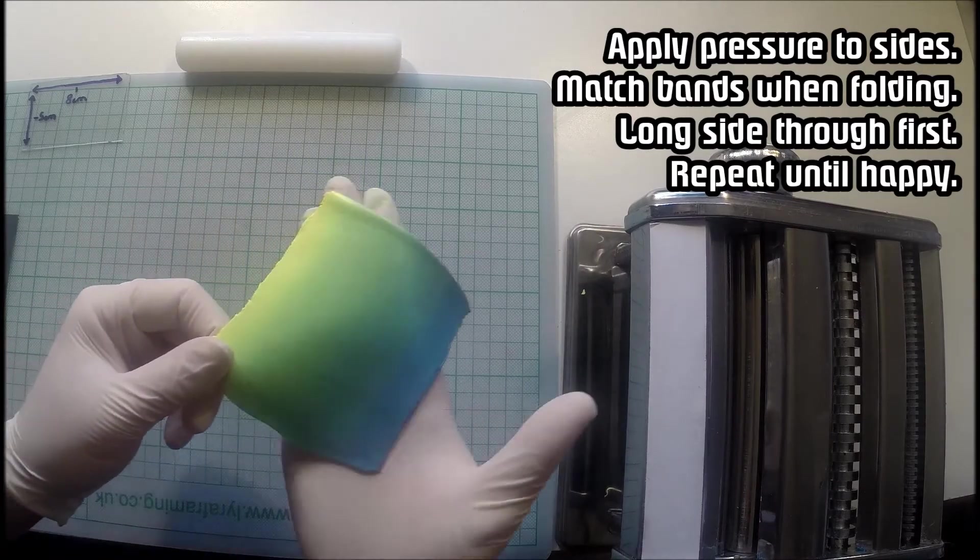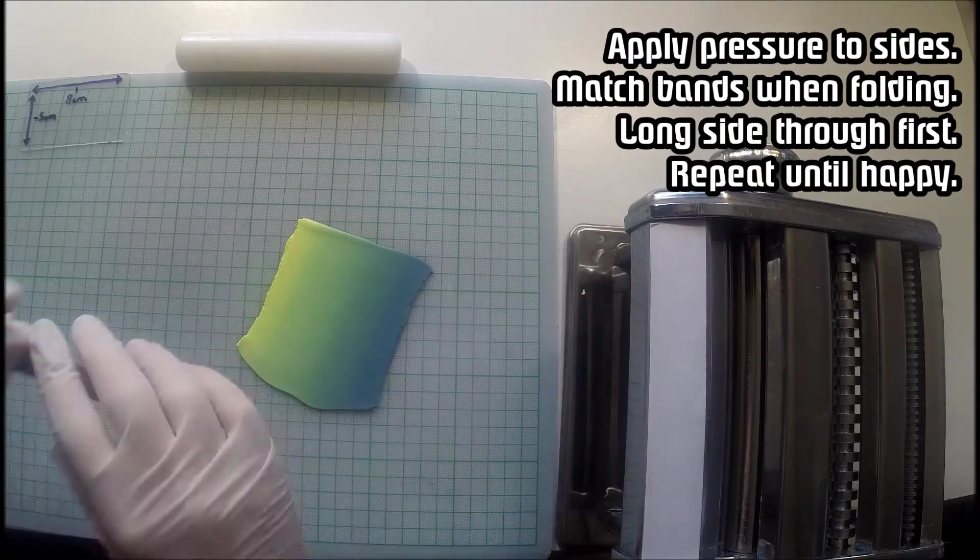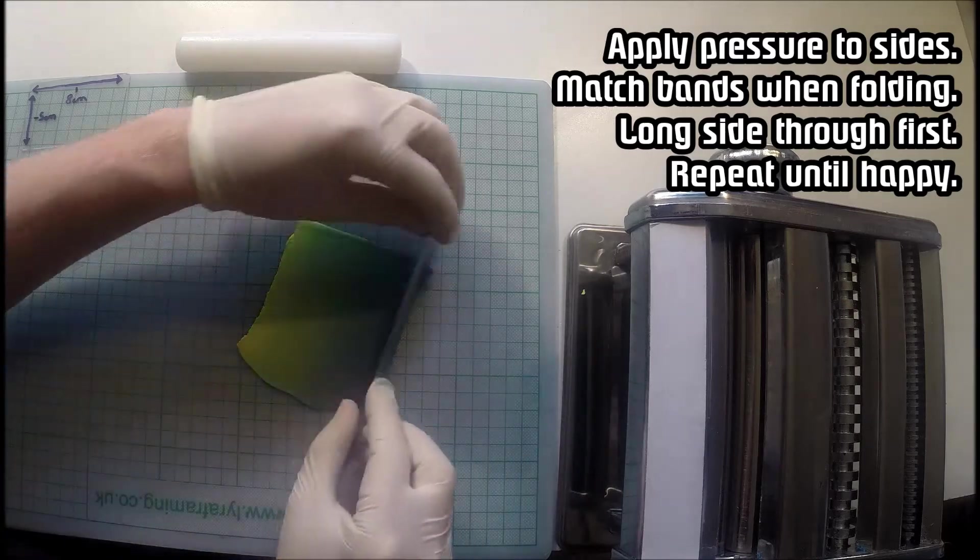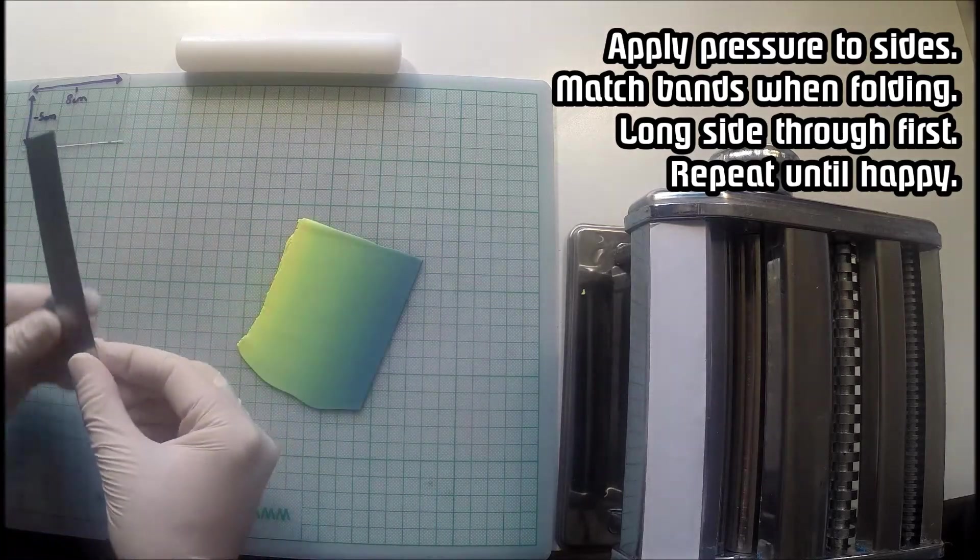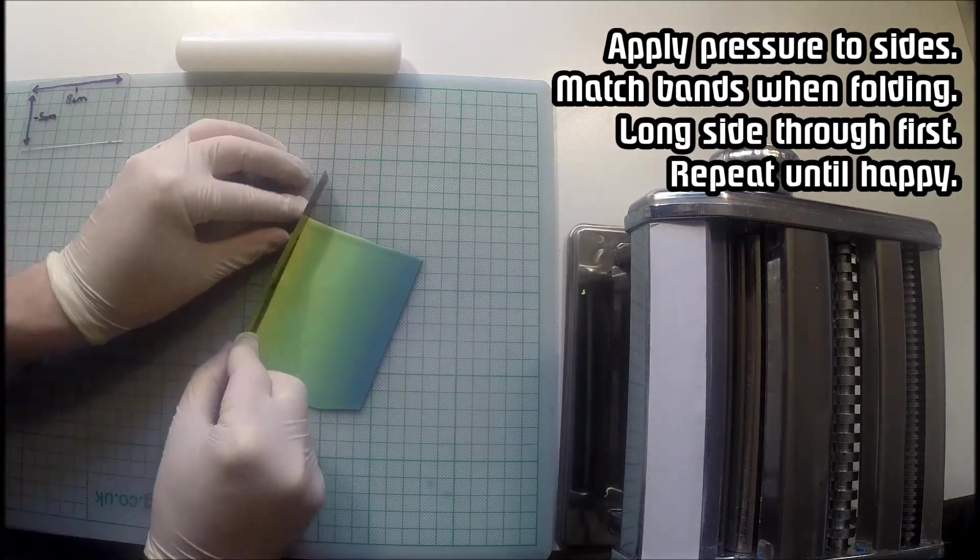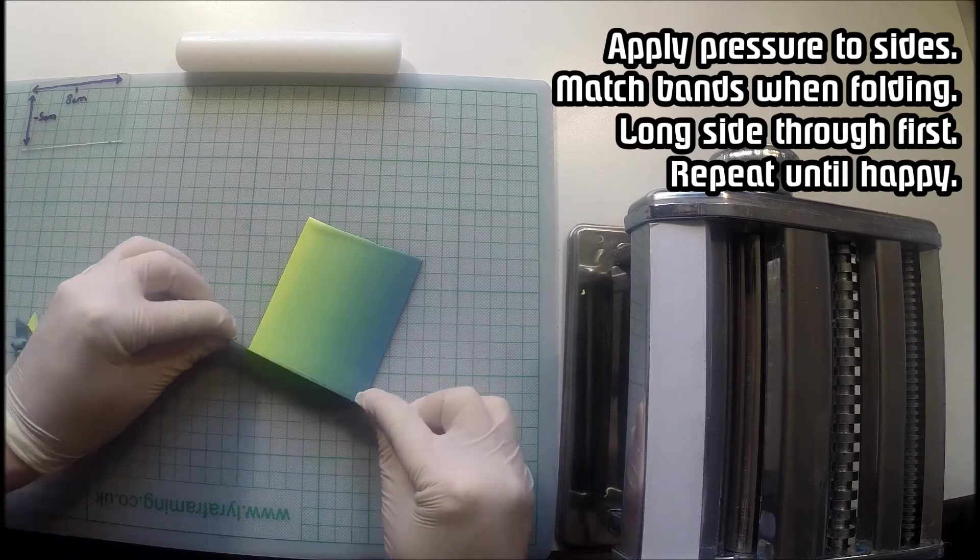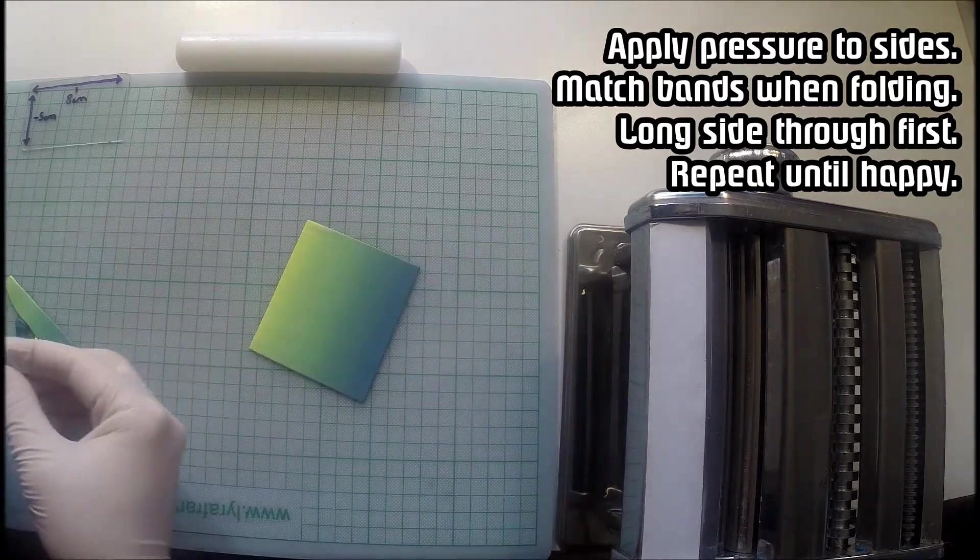And once you're happy with where it's at just take it out, have a look at it, looks good, take your tissue blade and then give it a good trim. You don't have to give it a good trim, it entirely depends what you intend to use it for but it makes me feel good when it looks good so I like to trim my Skinner Blends.